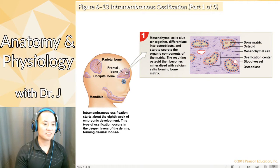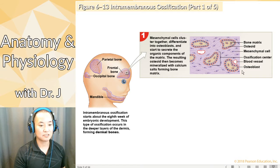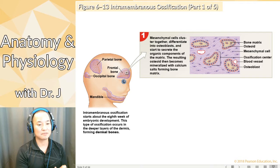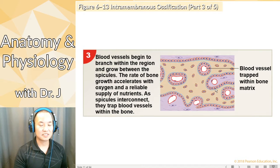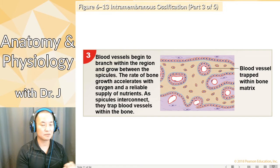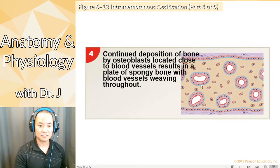In intramembranous ossification, it starts with mesenchymal cells — those soft connective tissue membranes. Osteoblasts build new bone, and as they do, little regions of bone grow bigger and start fusing. Blood vessels are needed because all that bone mineral — the calcium, phosphate, carbonate — has to come from somewhere. Blood vessels are supply lines delivering the raw ingredients that osteoblasts need to build new bone matrix.